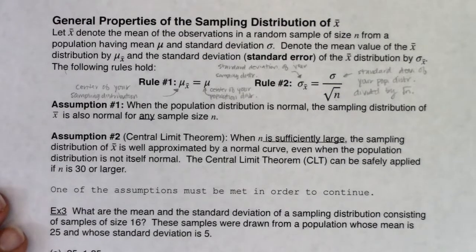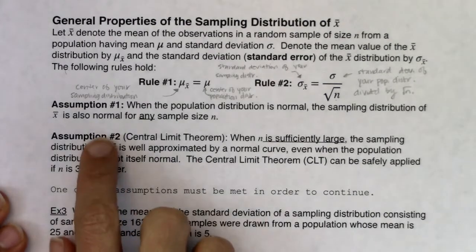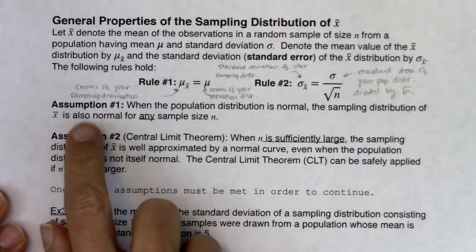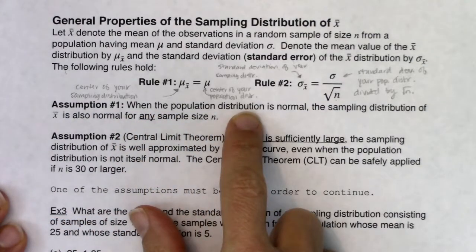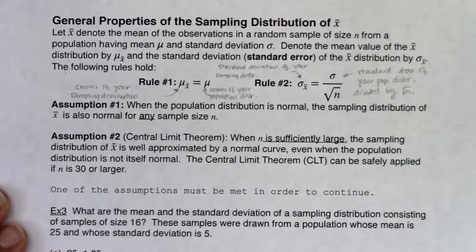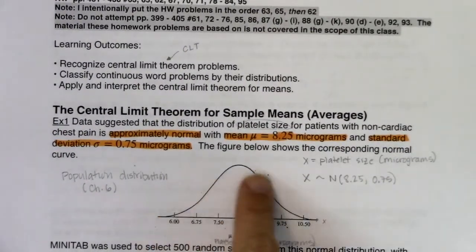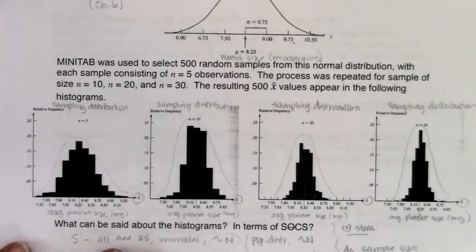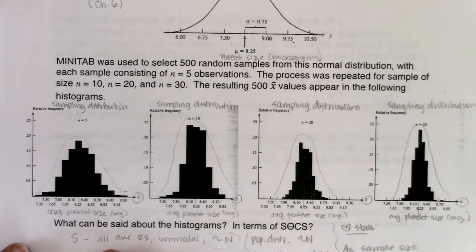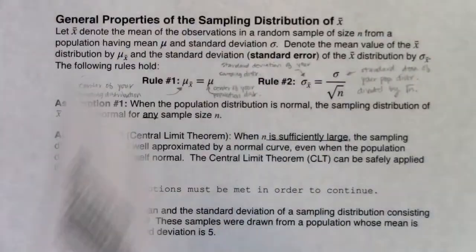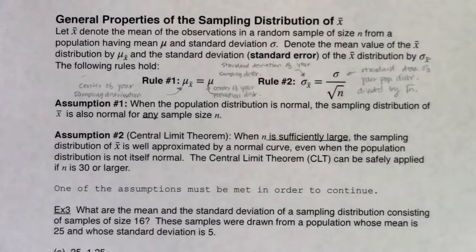We have to figure out when we can put the approximately normal symbol on the sampling distribution. There are two ways. First, if your population distribution is normal, then your sampling distribution is normal for any sample size. In example 1, since the population was approximately normal, all four sampling distributions were approximately normal regardless of sample size. That is one way to get normality in mean land.